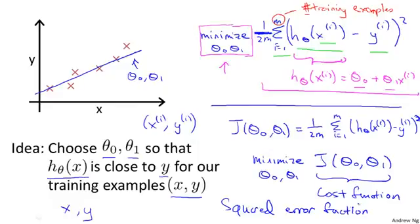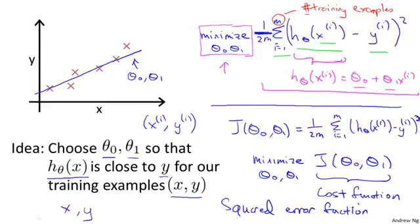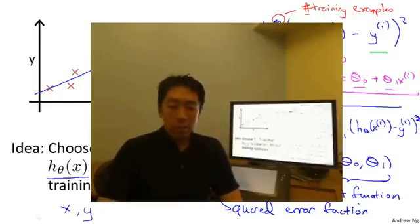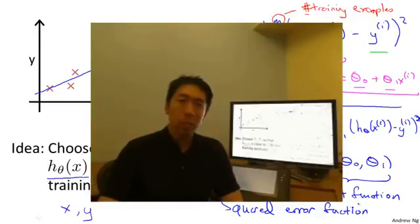Okay, so that's the cost function. So far, we've just seen a mathematical definition of this cost function. And in case this function j of theta 0, theta 1, in case this function seems a little bit abstract and you still don't have a good sense of what it's doing, in the next video, in the next couple of videos, I'm actually going to go a little bit deeper into what the cost function j is doing and try to give you better intuition about what is computing and why we want to use it.